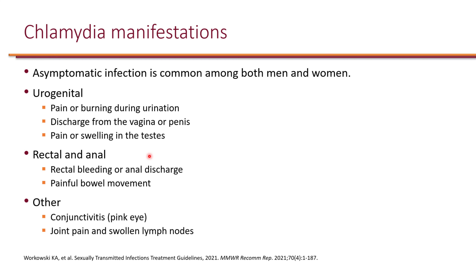Chlamydia and gonorrhea manifestations are pretty similar. For chlamydia, it could be asymptomatic among both men and women. The urogenital site of infection presents with pain or burning during urination, discharge from the vagina or penis, and pain or swelling in the testes. Depending on the route of sexual intercourse, rectal and anal infection causes rectal bleeding, anal discharge, or painful bowel movement. Outside of genital and rectal routes, conjunctivitis can occur, and in severe cases, joint pain and swollen lymph nodes.